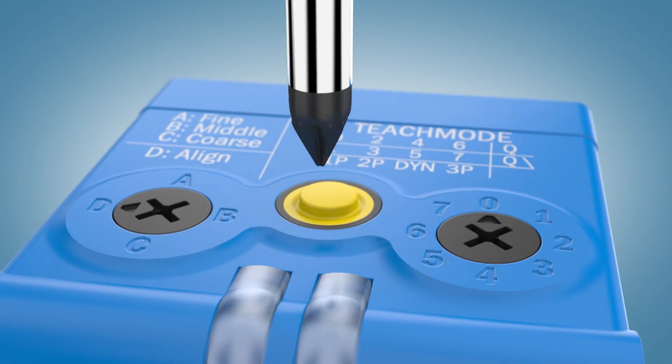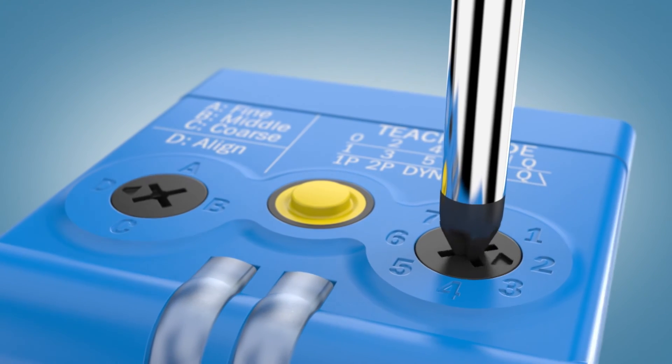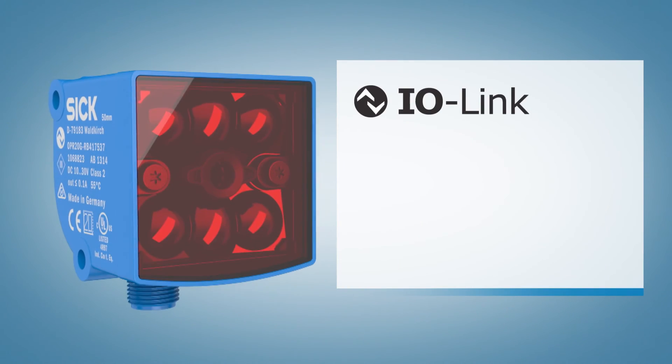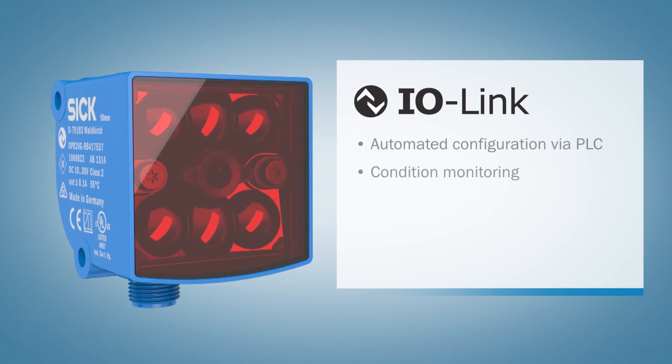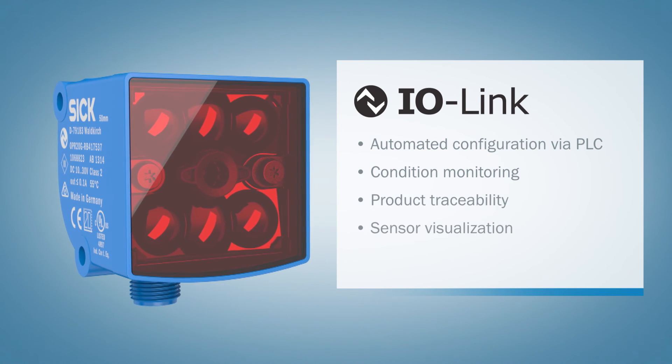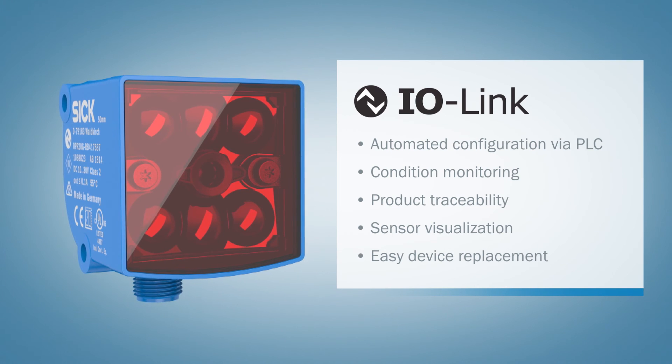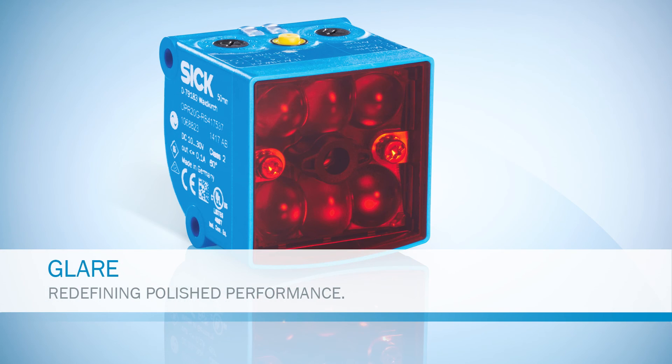Equipped with IO-Link, the glare sensor provides intelligent communication with additional benefits from configuration and operation through to monitoring. With the new glare sensor, we are redefining polished performance and underlining our promise: we simply detect any object.